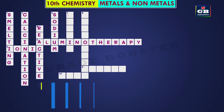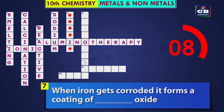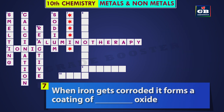The next one. Seven down: when iron gets corroded, it forms a coating of dash oxide. Ferric oxide — did you get it? The answer is ferric. When iron gets corroded, it forms a coating of ferric oxide.